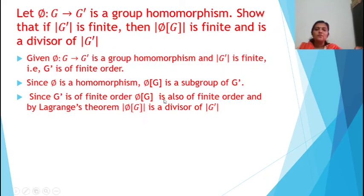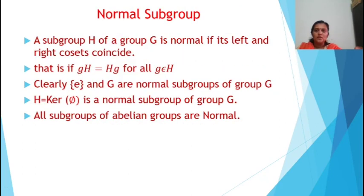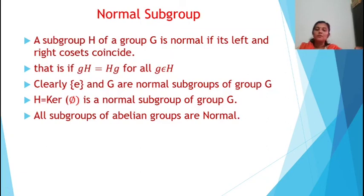Now, let phi from G to G' be a group homomorphism such that the cardinality of G' is finite. Then the cardinality of phi(G) is finite and is a divisor of the cardinality of G'. Since phi is a homomorphism, phi(G) is a subgroup of G' by the relevant theorem. Since G' is of finite order, phi(G) is also of finite order, and by Lagrange's theorem, the cardinality of phi(G) is a divisor of the cardinality of G'.